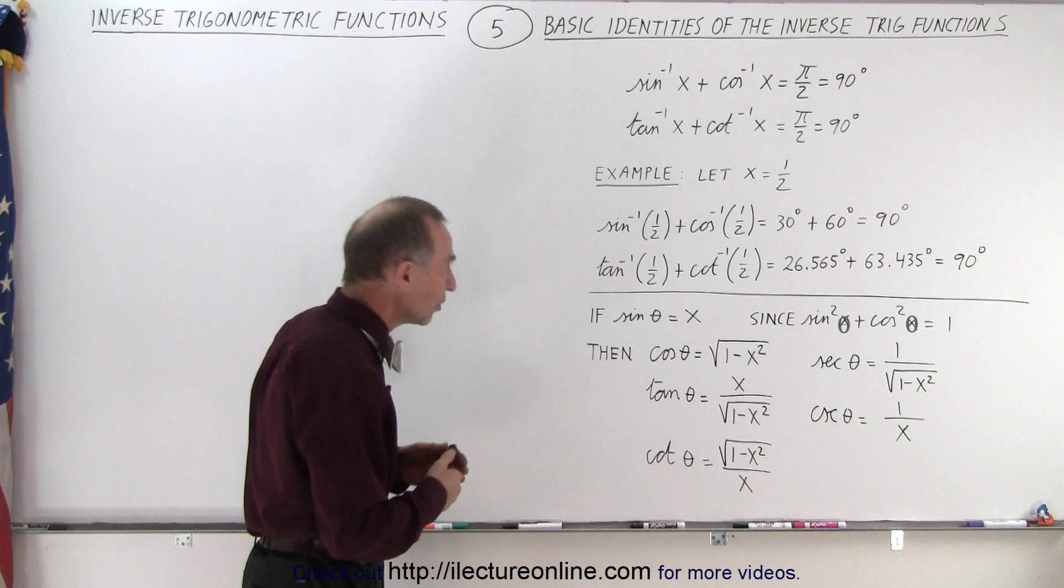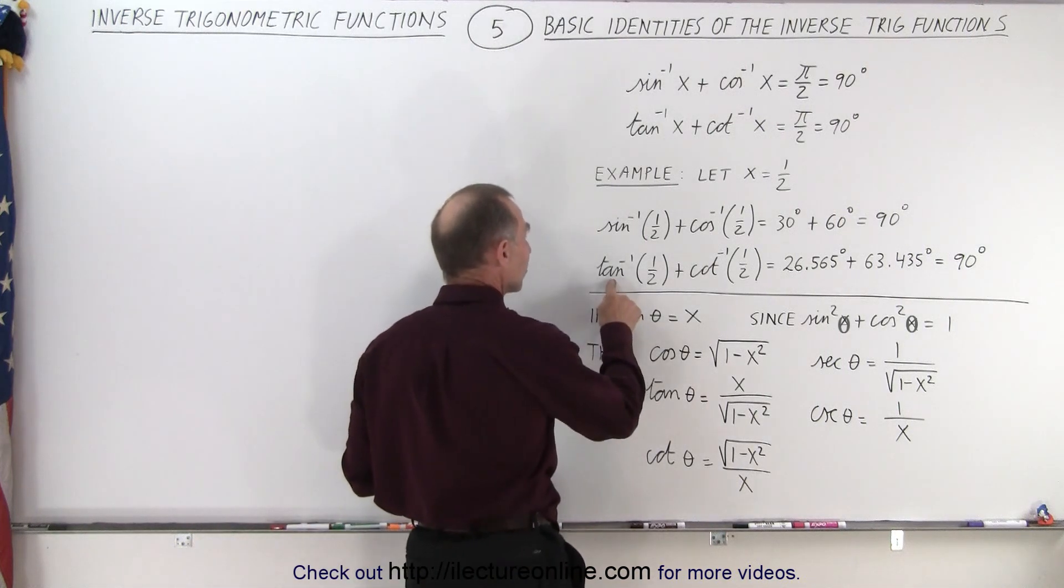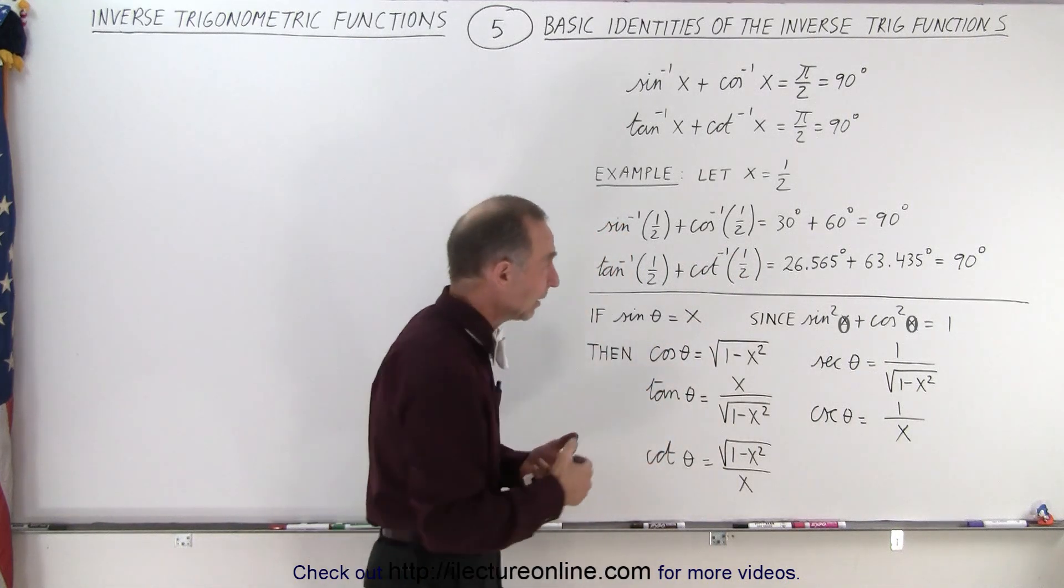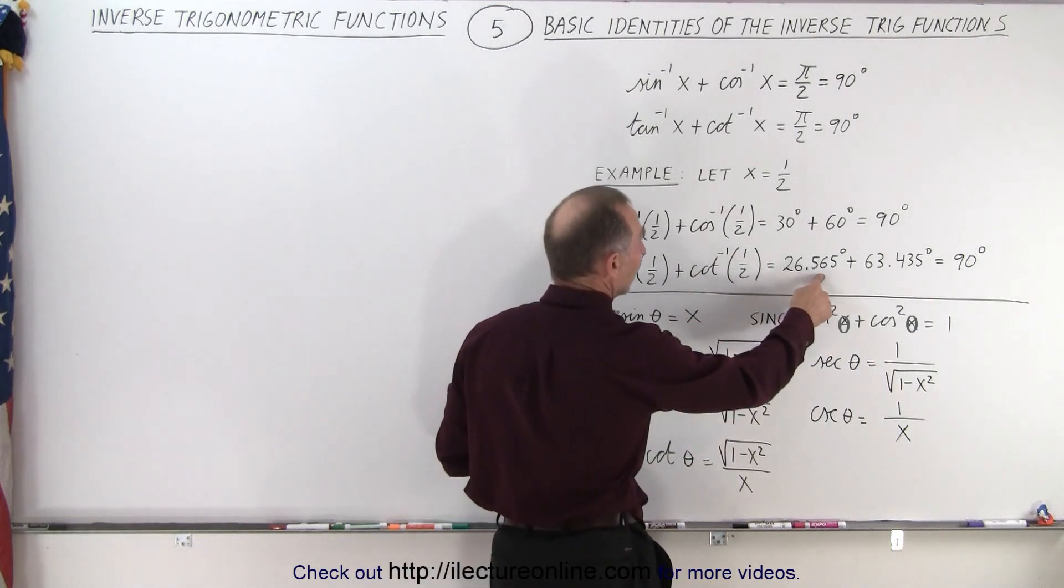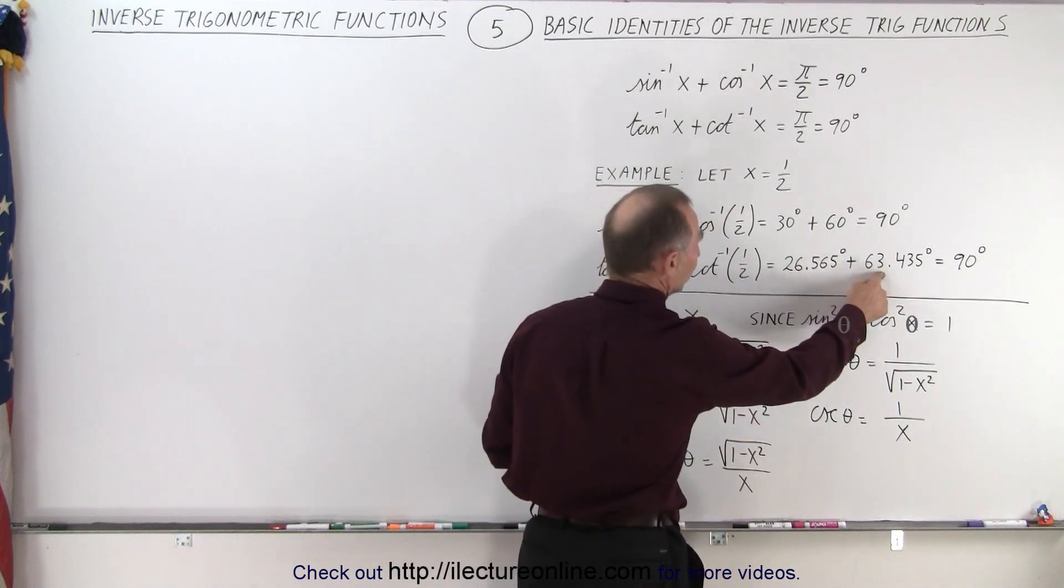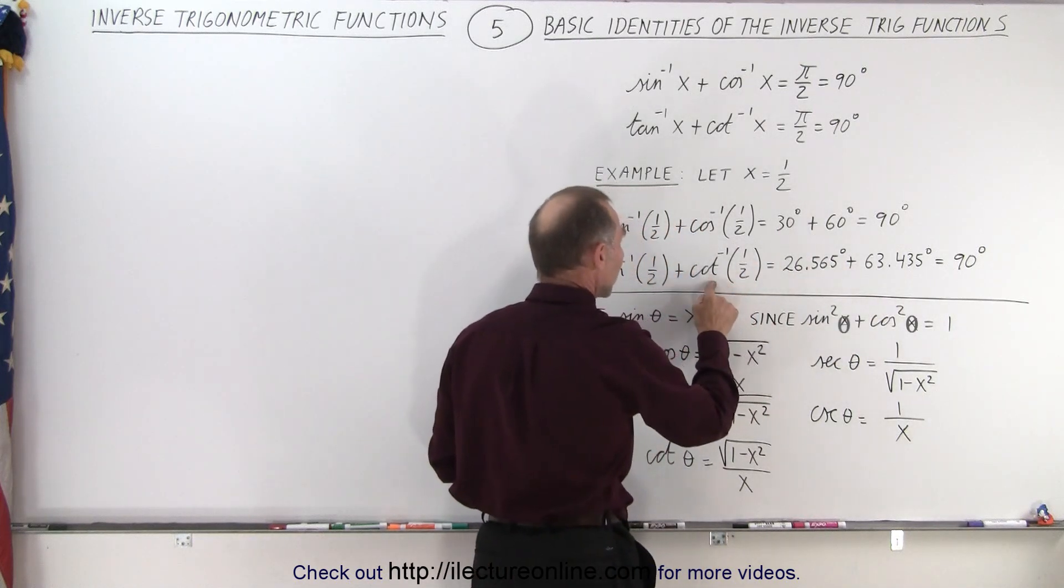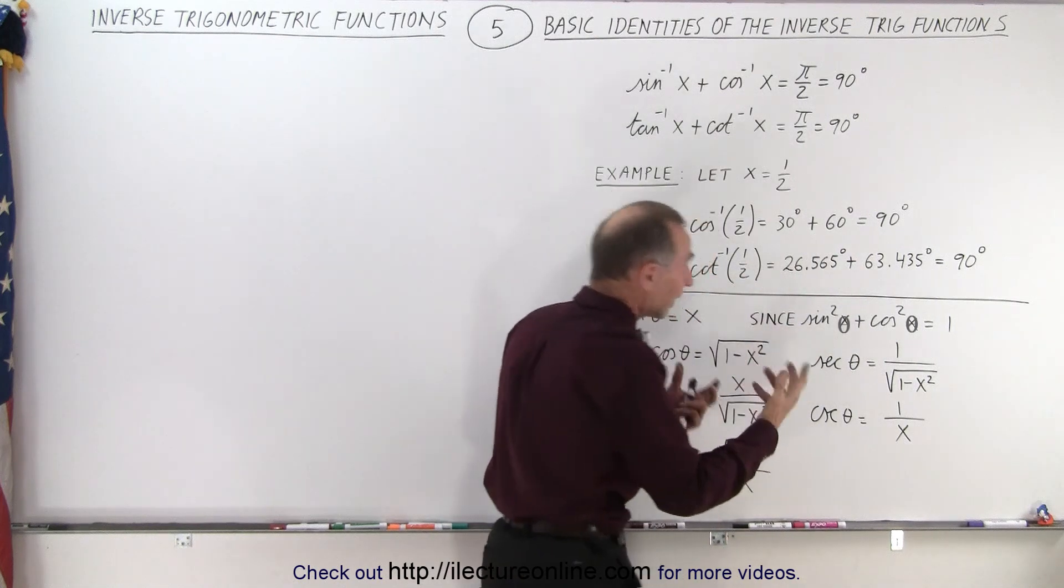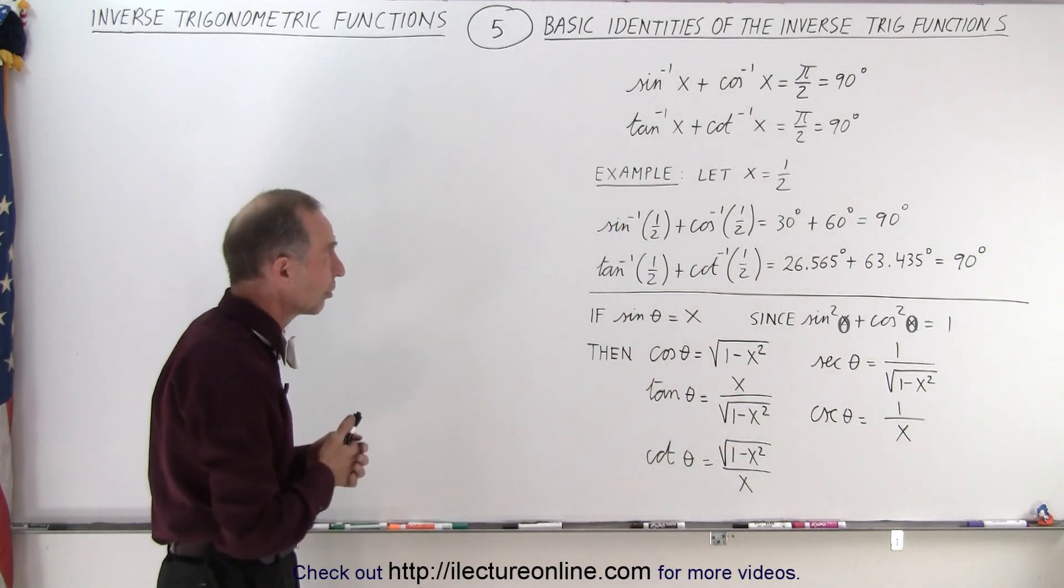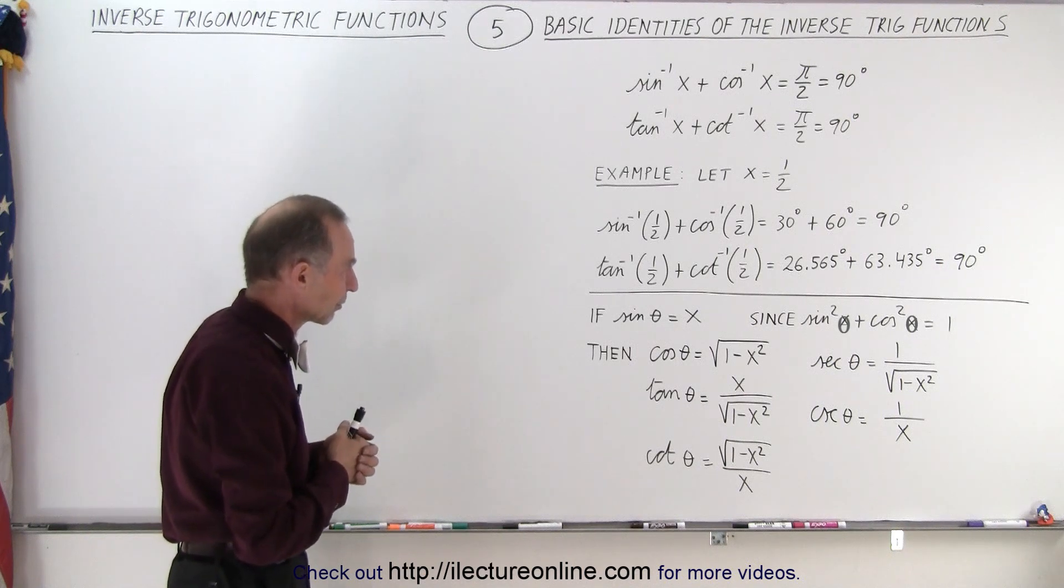The same with the tangent and the cotangent. If you take the inverse tangent of 1/2 and the inverse cotangent of 1/2, of course you're going to need a calculator for that. You end up with 26.565 degrees for the inverse tangent of 1/2 and 63.435 degrees for the inverse cotangent of 1/2. When you add them together again you end up with 90 degrees. So those are the basic relationships of the inverse trigonometric functions.